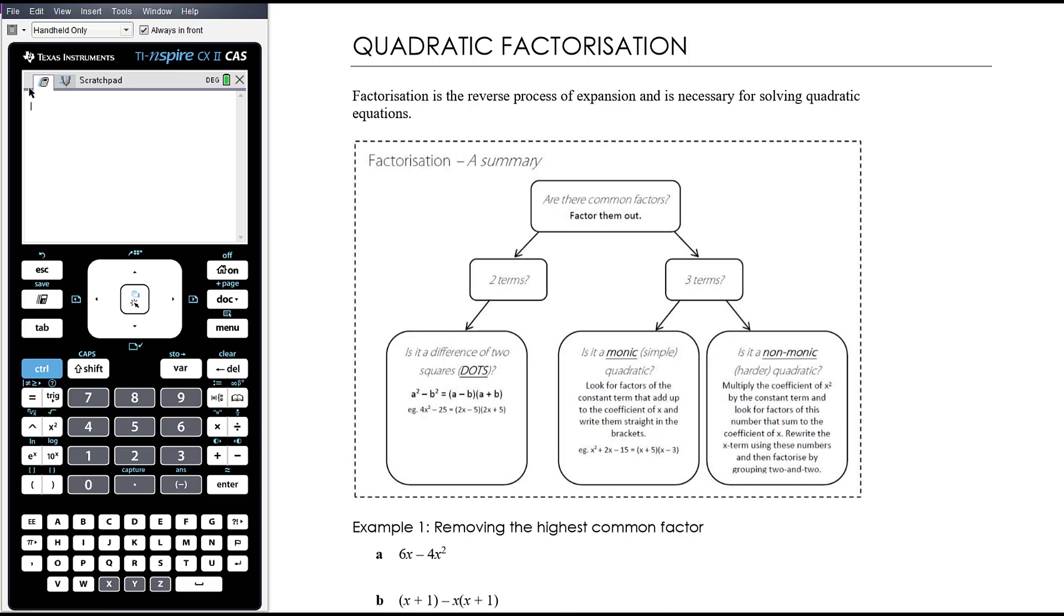If it's a non-monic or harder quadratic, that is, if the coefficient of x squared is anything other than 1, you're going to need to do the harder factorization method. I'll run through that here. I tend to do it in a particular way. It is possible to do harder factorization by trial and error. Some people call that the cross method. Please be aware that the cross method is just a way of setting out your trial and error. It is trial and error. So in situations where there aren't many options to trial and error, it's probably the more efficient way. But in situations where there could potentially be lots of options to have to trial and error, it's not the most efficient way. So I tend to use a different method which involves a step of factorization by grouping, which I find works every time.